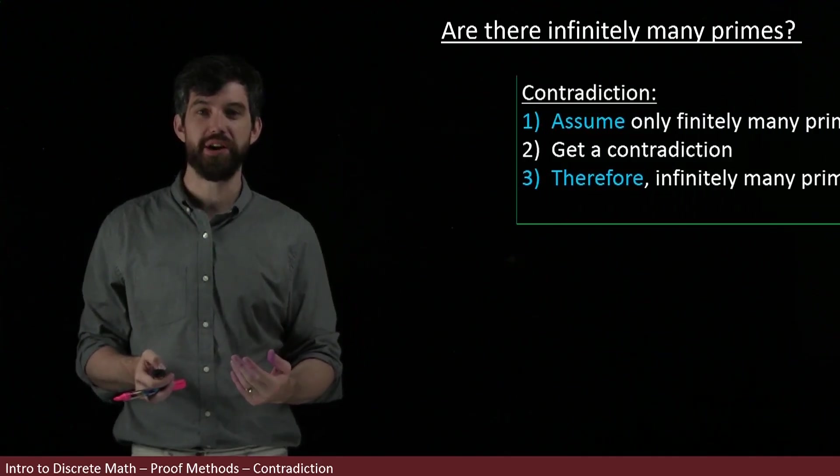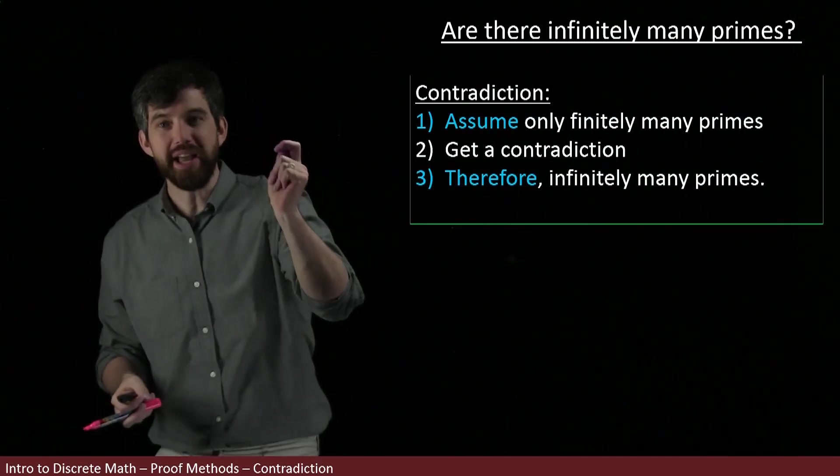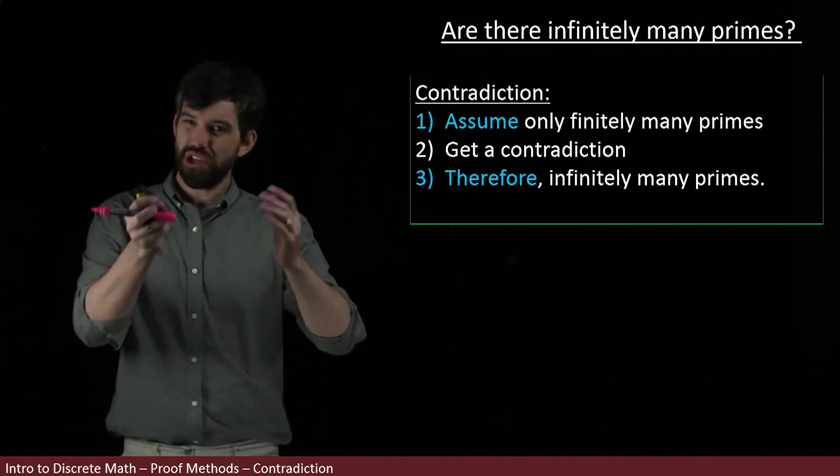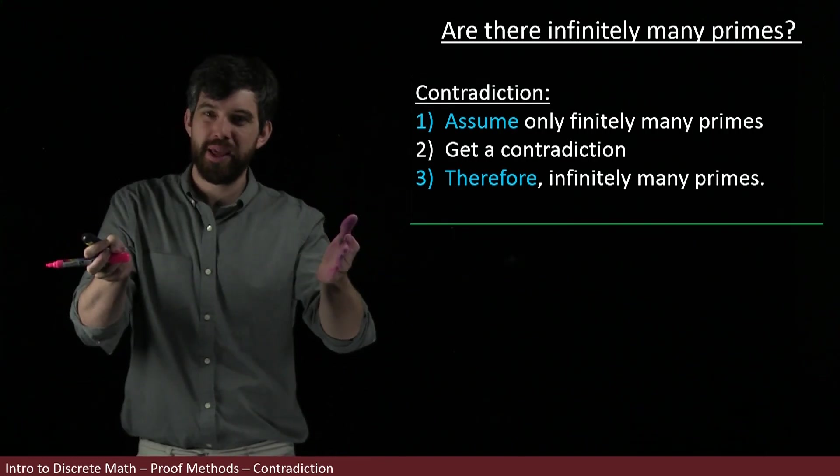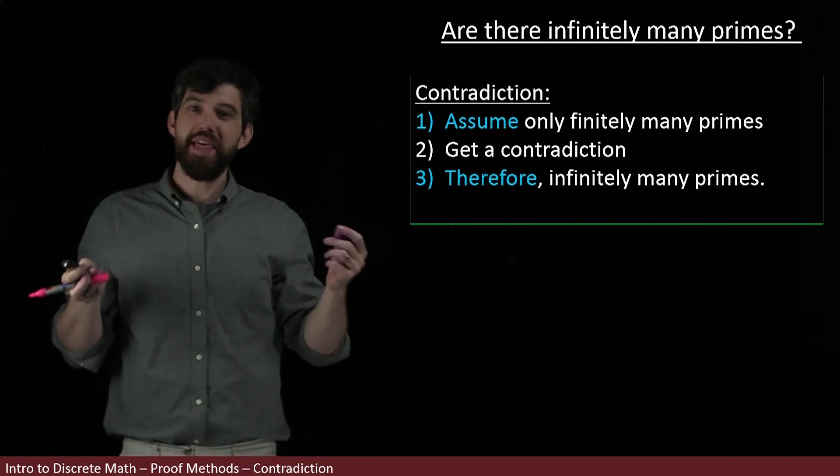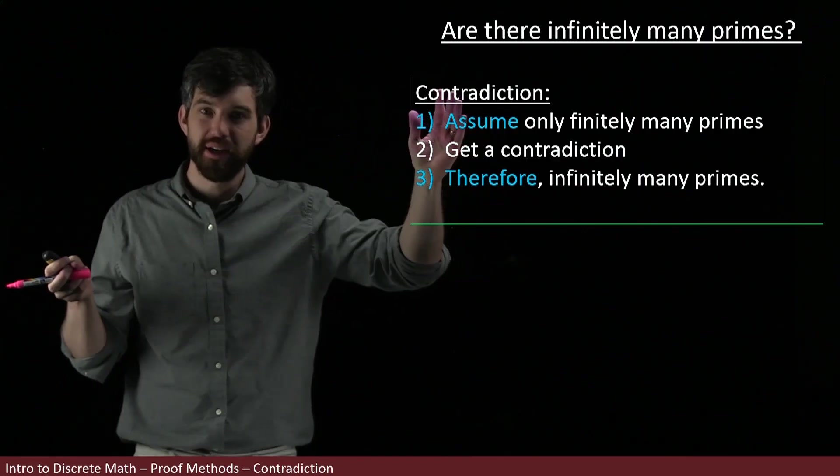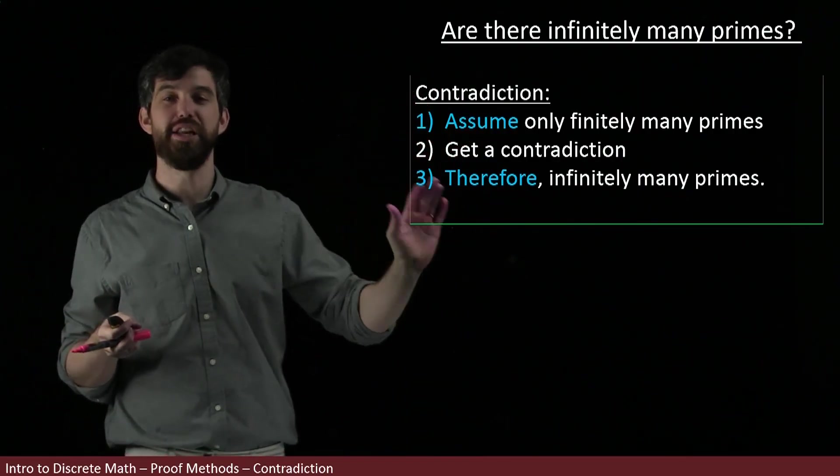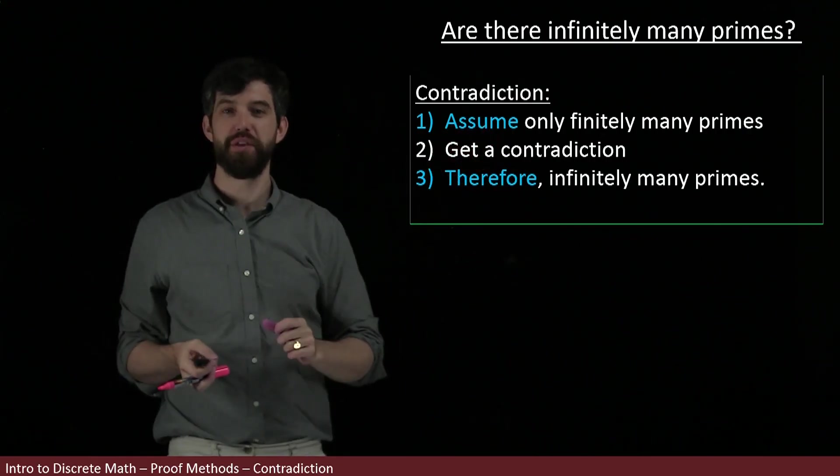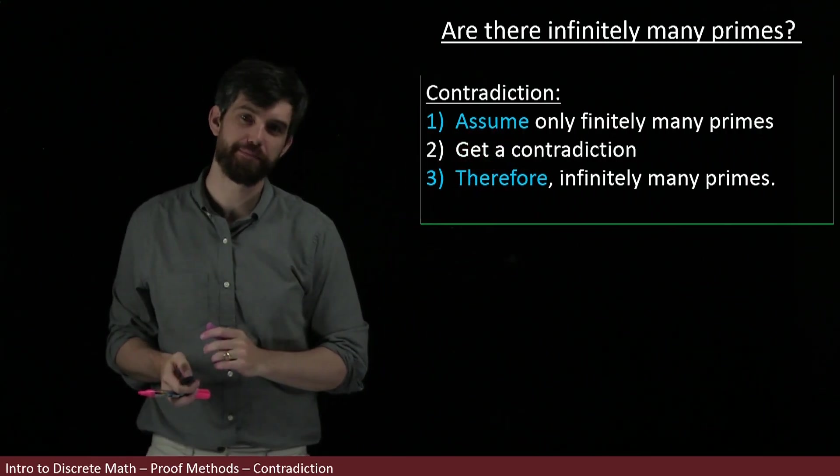The idea of contradiction here is that I'm going to begin by assuming there are finitely many primes. Then I'm going to use that assumption to get some sort of nonsensical statement, and that's going to tell me my assumption had to be false. Therefore, there were infinitely many primes.